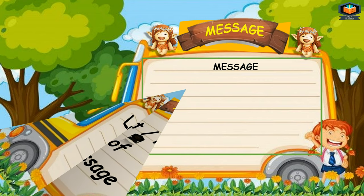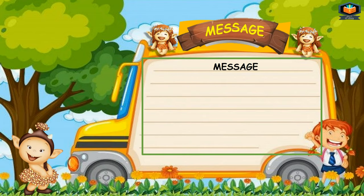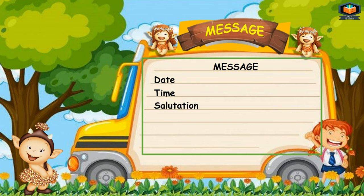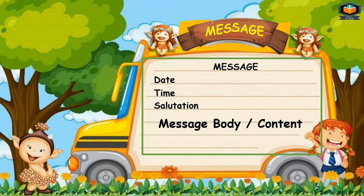The format of a message: in the very first line, we write MESSAGE in capital letters. In the next line, we write the date. Then the time. Then the salutation — for example, Dear Brother or Dear Friend. After that, we write the message body or content according to the topic and the question. At the end, we write the sender's name — the name of the person who is sending the message.